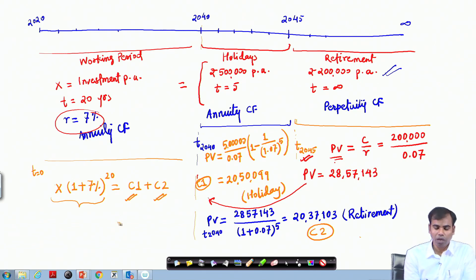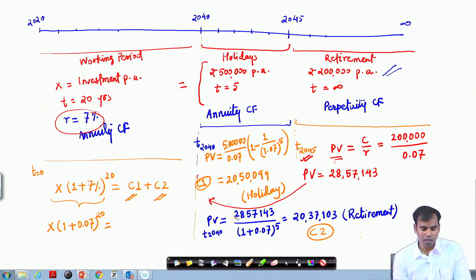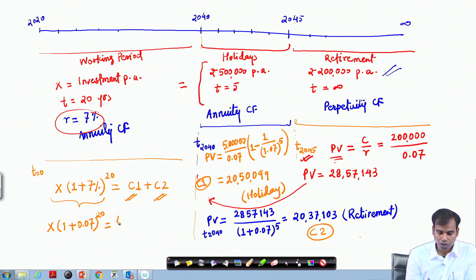Equating: X multiplied by 1 plus 0.07 to the power 20 equals C1 plus C2, which together sum to 40,87,202.